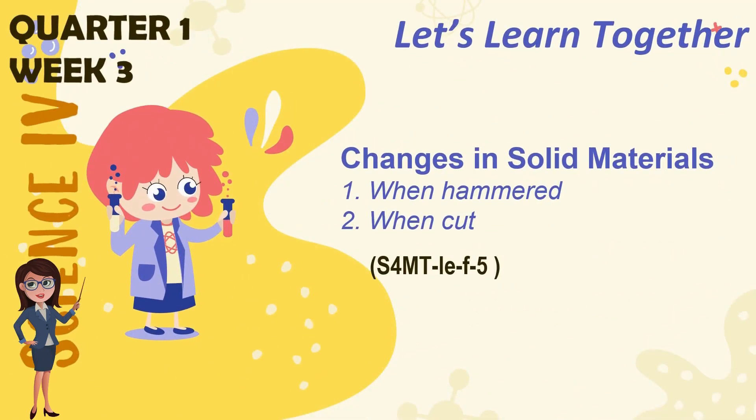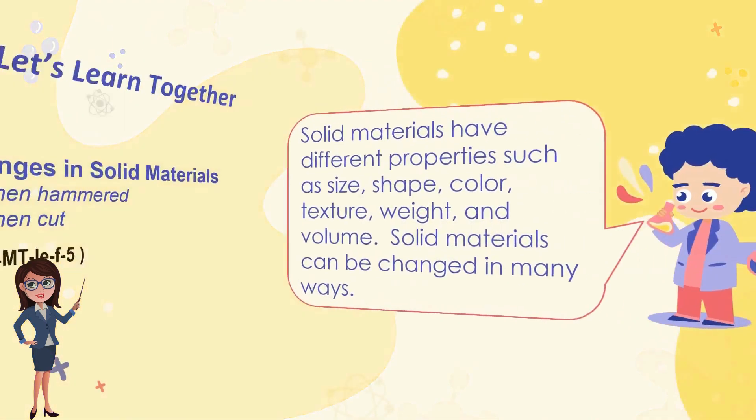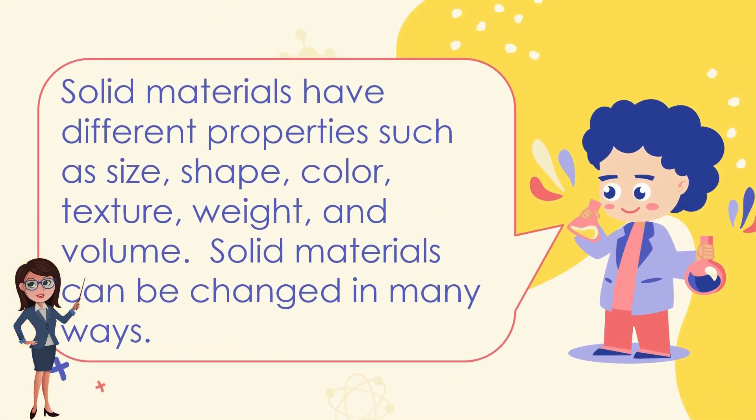Now, let's learn together Quarter 1, Week 3: Changes in solid materials when hammered or when cut. Solid materials have different properties such as size, shape, color, texture, weight, and volume. Solid materials can be changed in many ways.